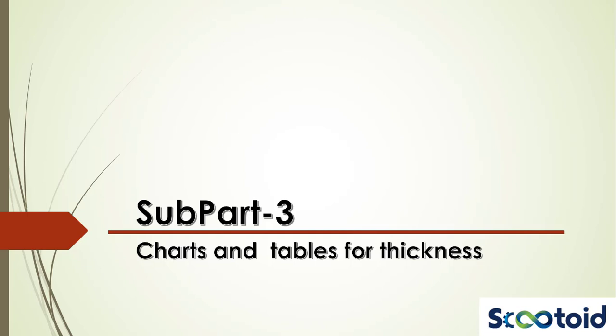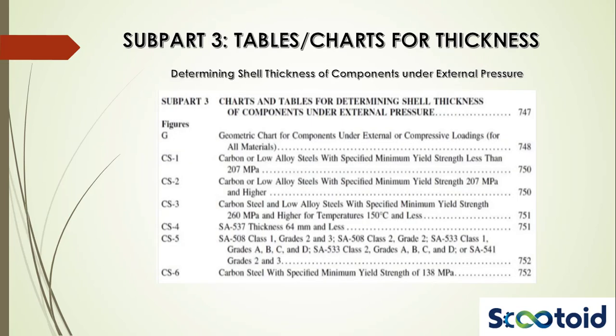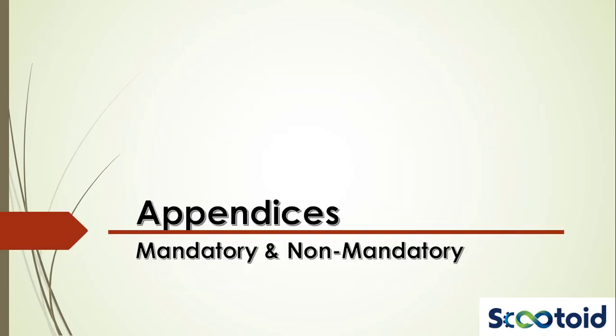Subpart 3 provides charts and tables for determining the shell thickness of components which are under external pressure. You'll get the chance to see some of these in the module on Section 8, Division 1, where we'll calculate the shell thickness of a vessel under external pressure. One of these is Figure G, which you will use to determine a factor called A, which you'll in turn use in chart CS2 to determine another factor B. This factor B will then be used to calculate the maximum allowable external working pressure for a given thickness of the vessel. More on this when we're in the module on Section 8, Division 1.